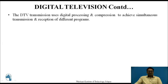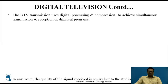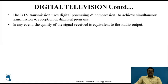Digital television transmission uses digital processing and compression to achieve simultaneous transmission and reception of different programs. Digital television generally uses different algorithms and compression algorithms for transmission and reception of different programs. In any event, the quality of the signal received is equivalent to the studio output — that is, the quality received from a transmitted area remains the same as the studio output, which is the real-time output.